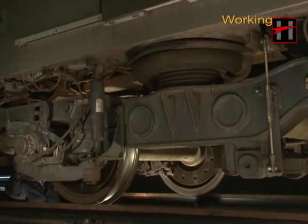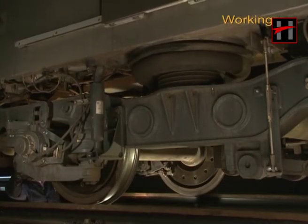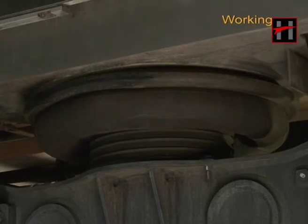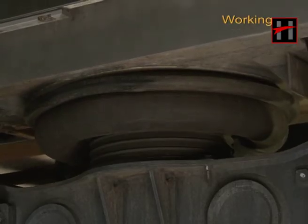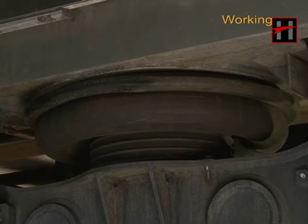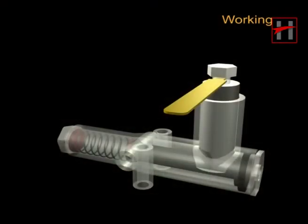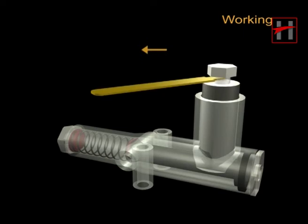When the vehicle load increases, the car body compresses the air bellows of the train. As the air bellows are compressed, the handle of the levelling valve goes to the charging position by the actuating mechanism.